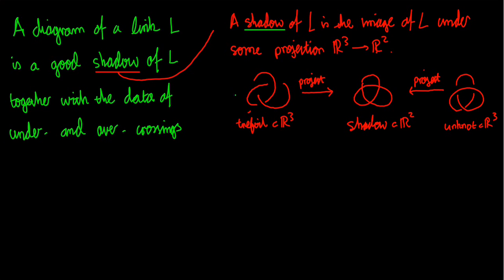For example, if this is the trefoil thought of as a subset of R3 - we all have to have the eye of faith in order to think of this as a subset of R3 - if we think of this as a subset of R3 and we project it down to the plane, which we think of as the plane of the screen here, then we'll get this image, which is a shadow. The shadow is, of course, not as nice as the knot. Why? Because it's got crossings in it, points where the shadow intersects itself.